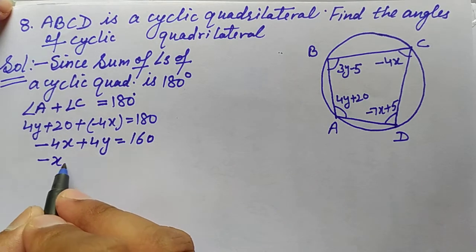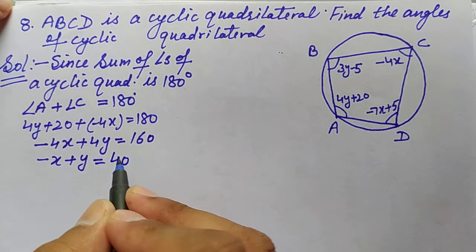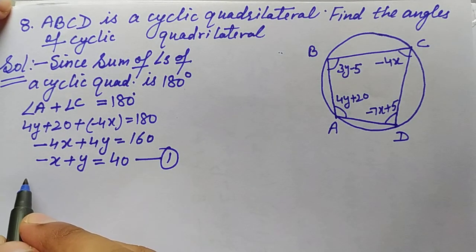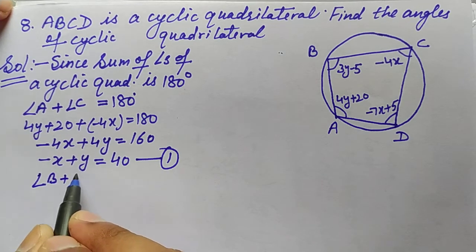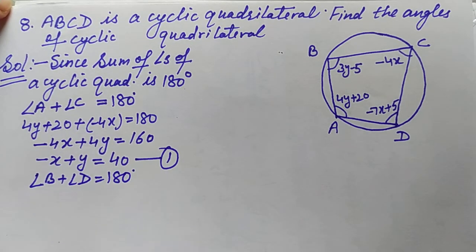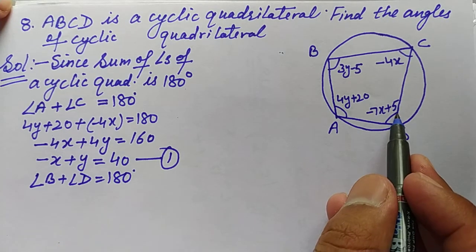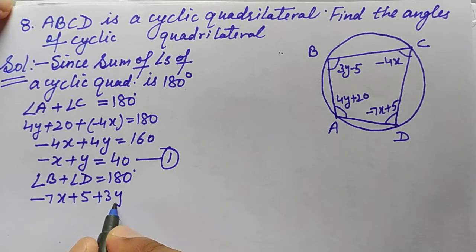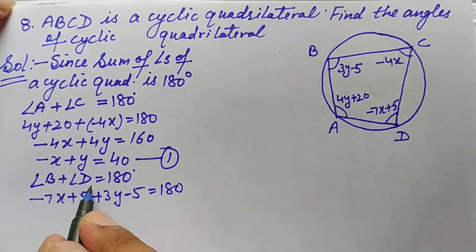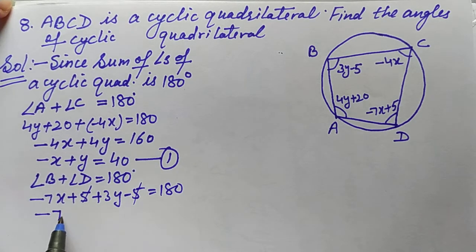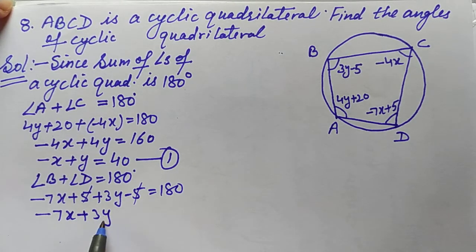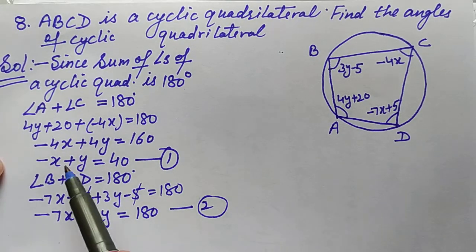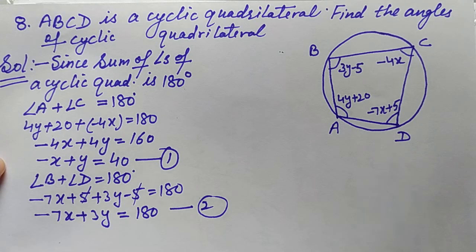This gives us our first equation: −x + y = 40. Similarly, angle B plus angle D equals 180°. Angle D is −7x + 5 and angle B is 3y − 5, so (−7x + 5) + (3y − 5) = 180°. The +5 and −5 cancel, giving our second equation: −7x + 3y = 180.